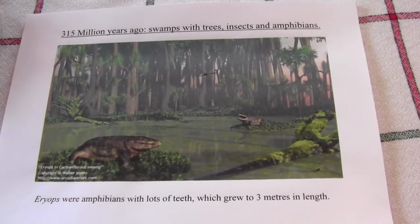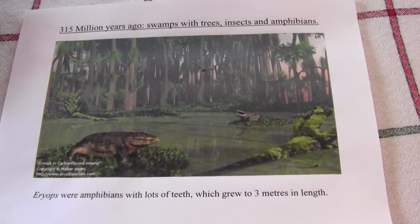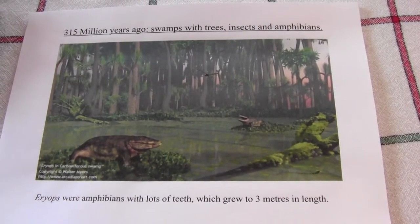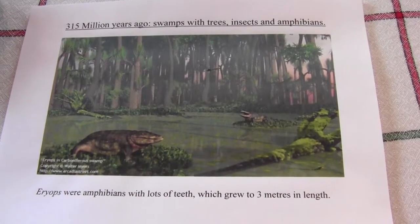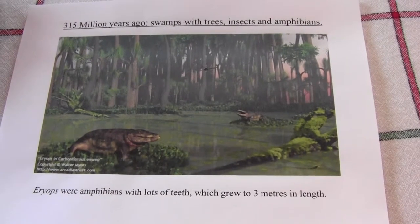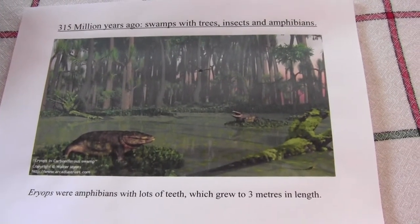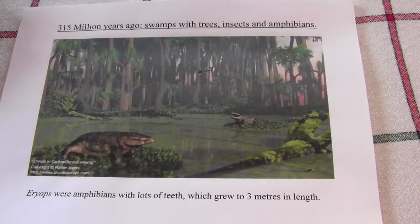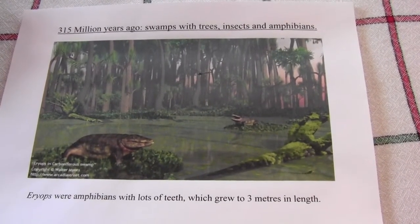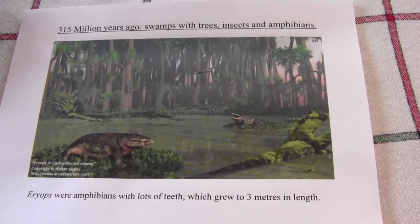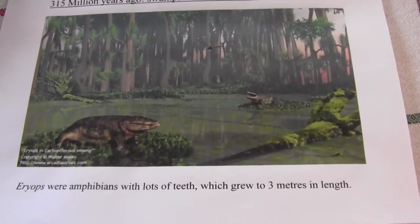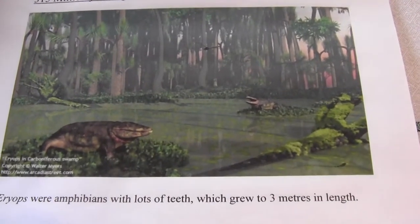About 350 million years ago, during the Carboniferous era, much of the land was covered in swamps with trees, rivers, and lots of still water. There were also insects and amphibians. The amphibians had evolved from lobed-finned fish that had come onto the land and developed the ability to breathe on land. Here, there's a picture of an amphibian called Eryops.